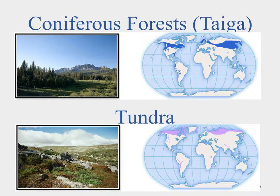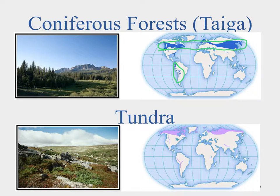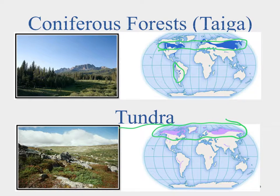The taiga or coniferous forests are closer to the poles and at higher elevations — that's where the pine trees appear. Then we reach the tundra: permafrost, the ground is permanently frozen, very sparse plant life. You might get some grasses in the warmer seasons, but it never truly gets warm enough for an extended growing season to support trees and shrubs.